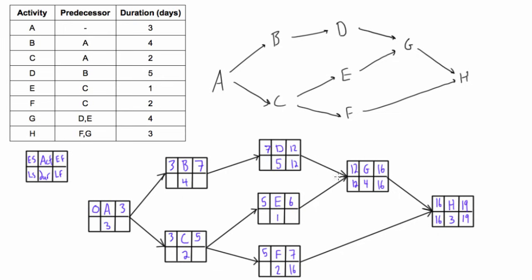We bring twelve to D since there's only one arrow leading in, and twelve minus five is seven for D's late start. Also twelve minus one is eleven for E's late start. Down at F: sixteen minus two gives fourteen. Now leading into C we have either eleven or fourteen — with the backward pass we take the smaller value, so eleven wins. We bring eleven into C's late finish.